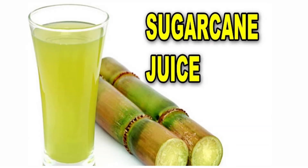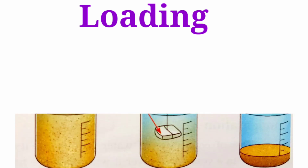Have you ever had sugarcane juice? The juice seller uses a piece of cloth to remove husk or other bigger particles which may be left in the juice. This process is also similar to filtration.